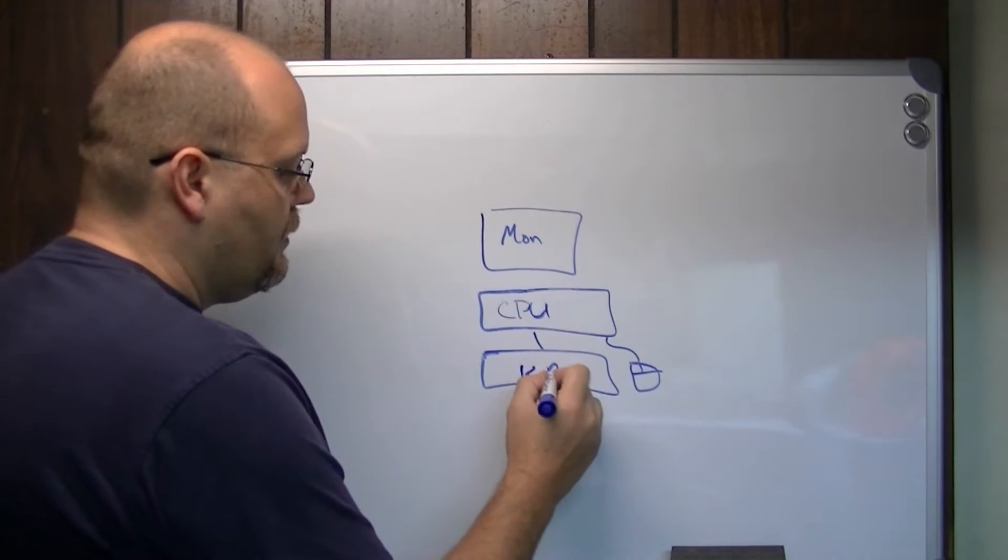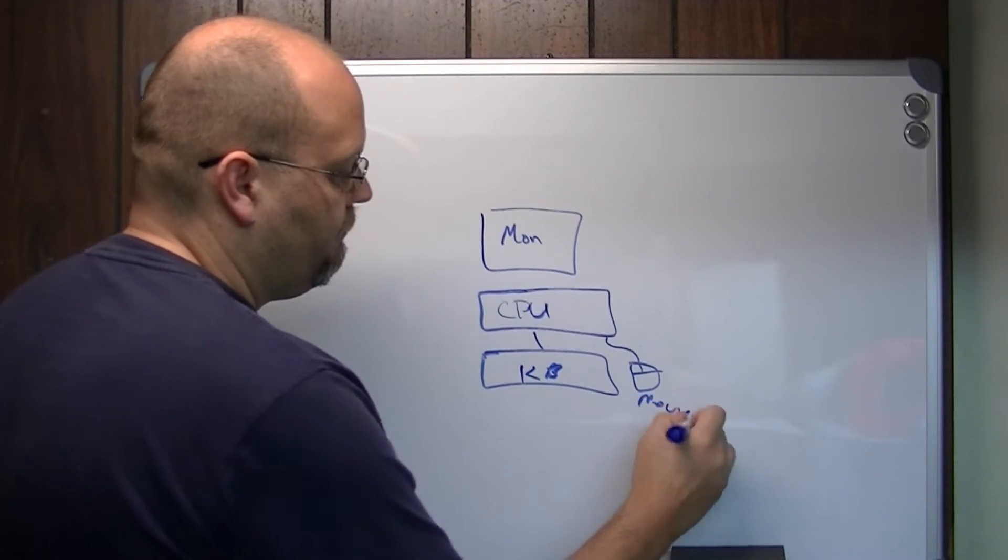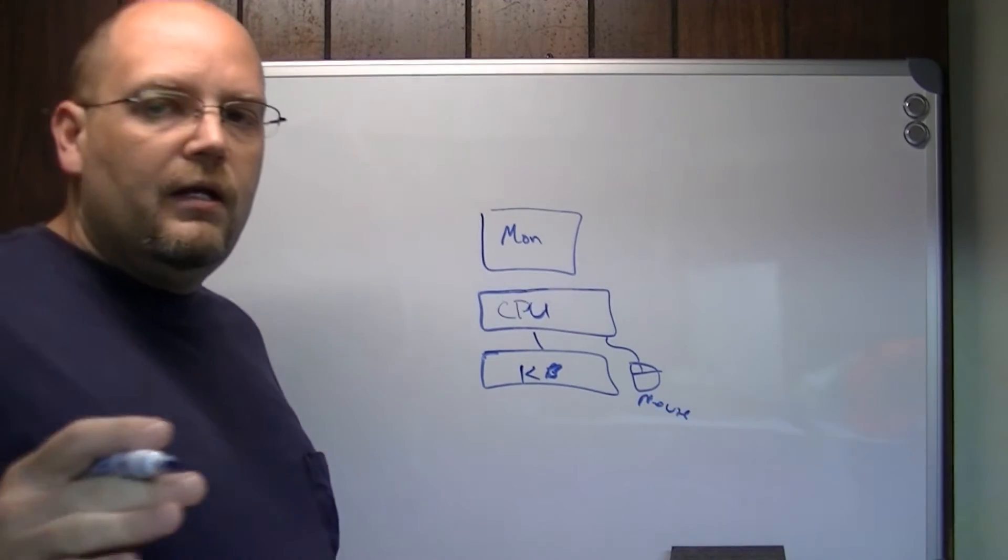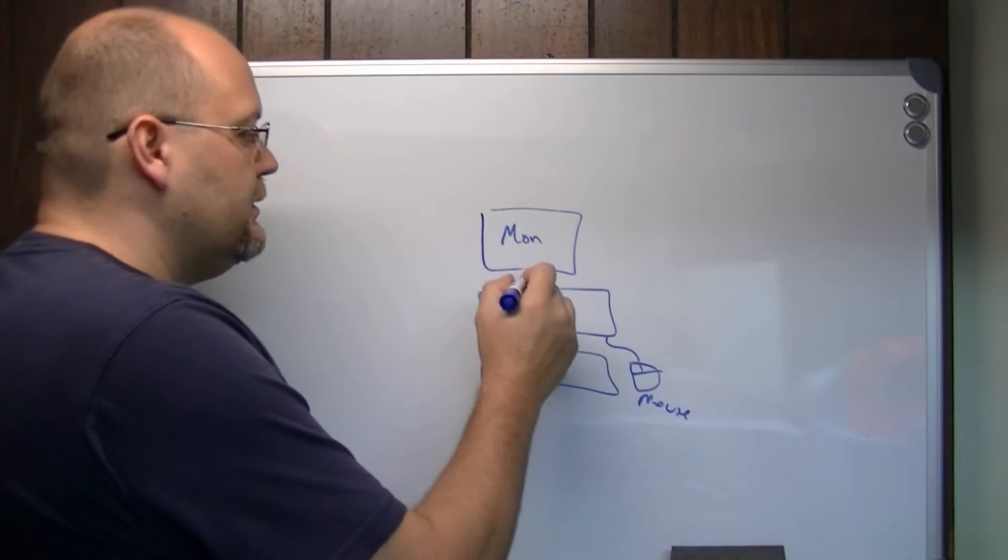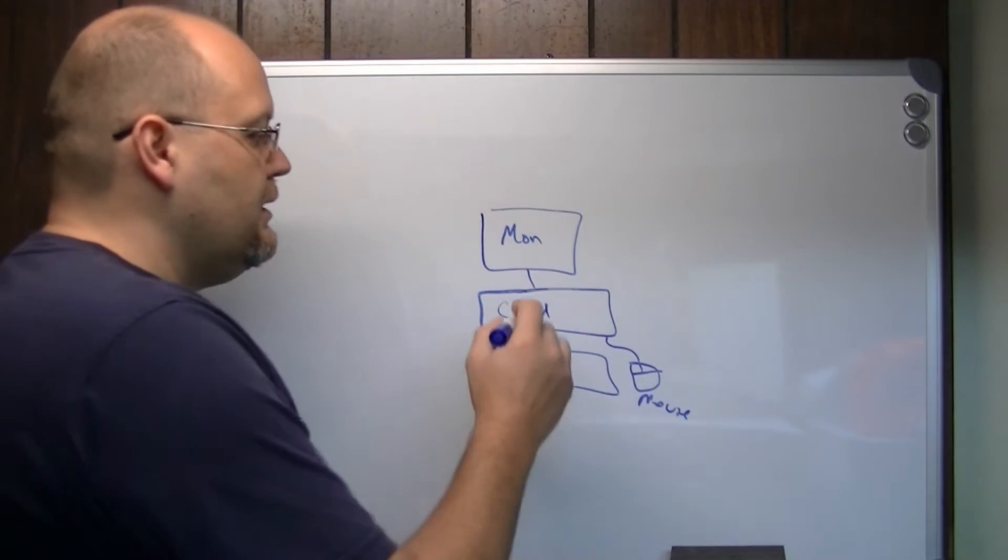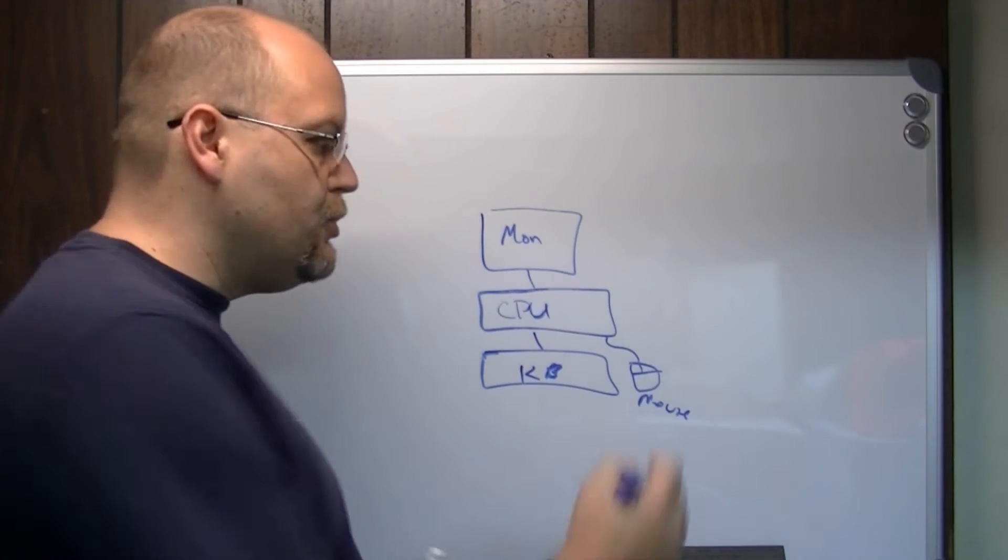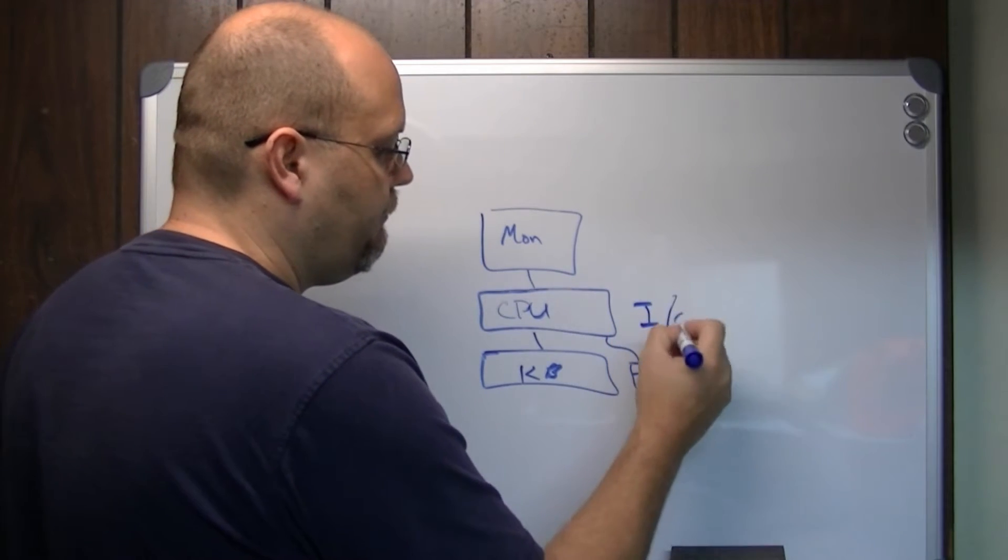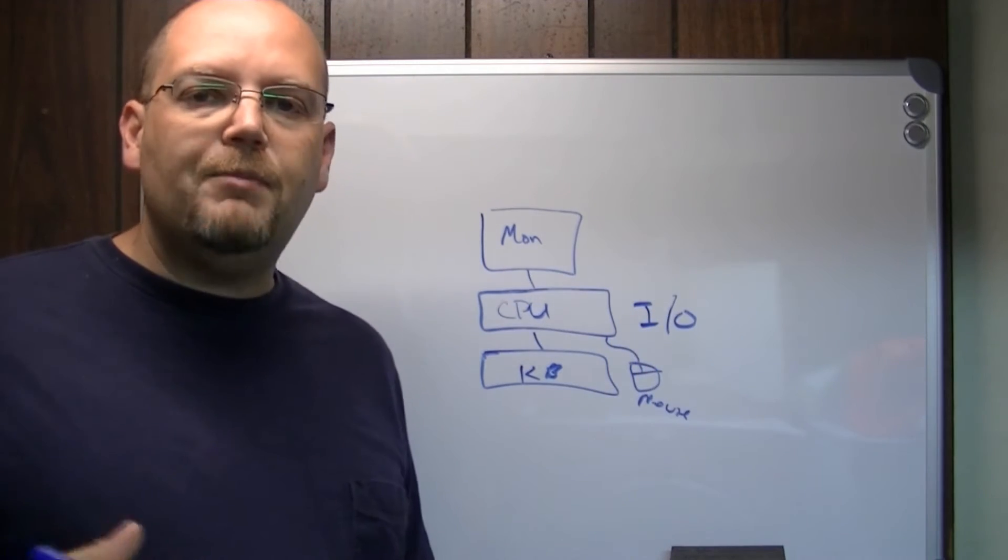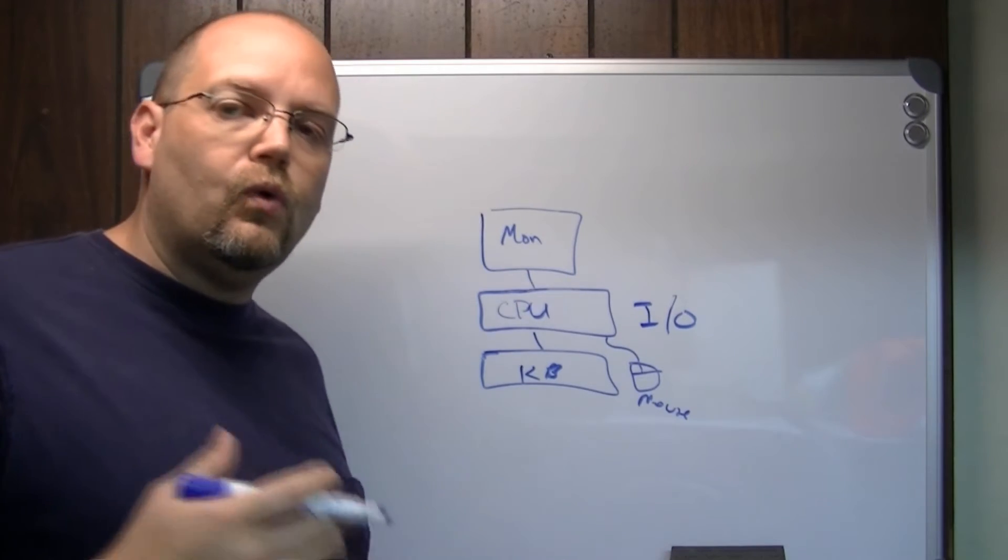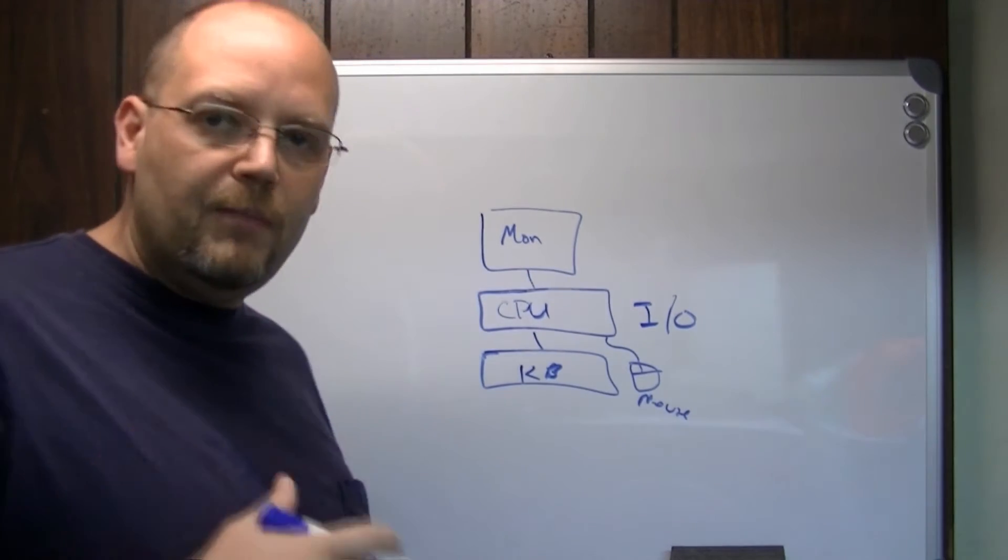And attached to that CPU will be your monitor and a keyboard and a mouse. So here's your keyboard, and here's your mouse, and the way these interact, in a general sense, is the CPU does what's called I.O., input-output. And devices can be input, they can be output, or they can be input-output, they can be both.